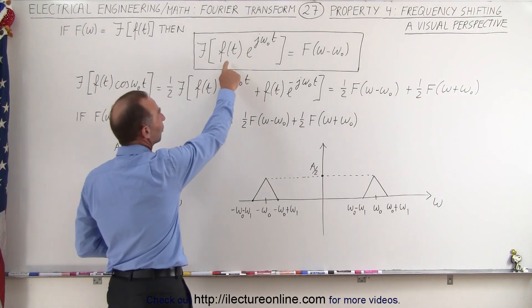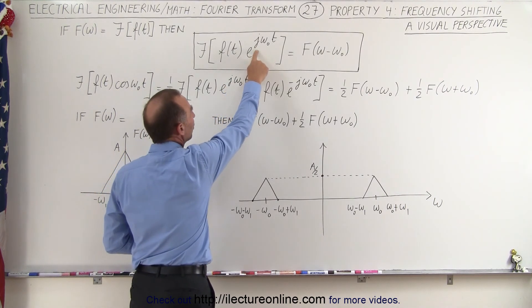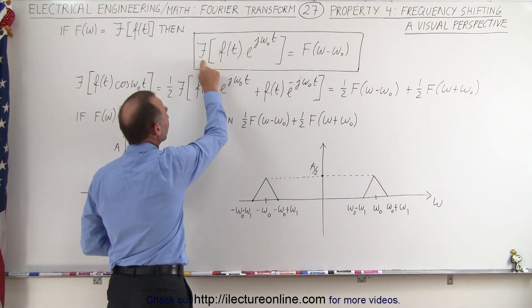We understand that whenever you multiply your function in the time domain times e to the j omega sub not t, then we take the Fourier transform of that.